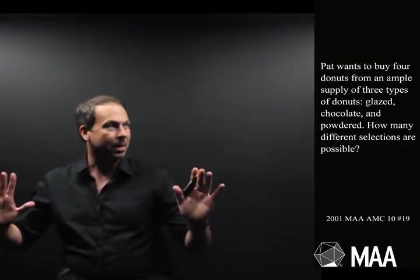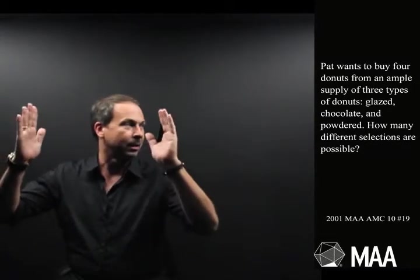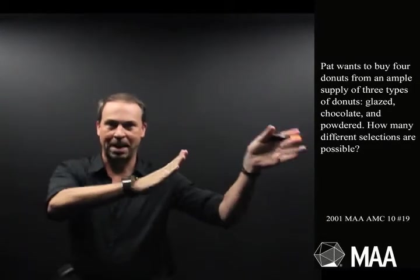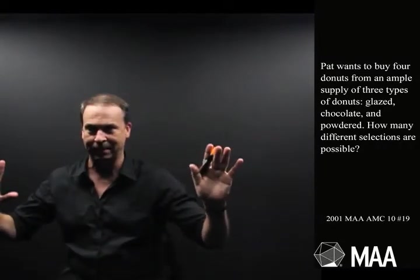Okay, so let me take this in. Pat wants to buy four doughnuts from a supply of glazed doughnuts, chocolate doughnuts, powdered doughnuts and there are plenty of each. That's what ample supply means.